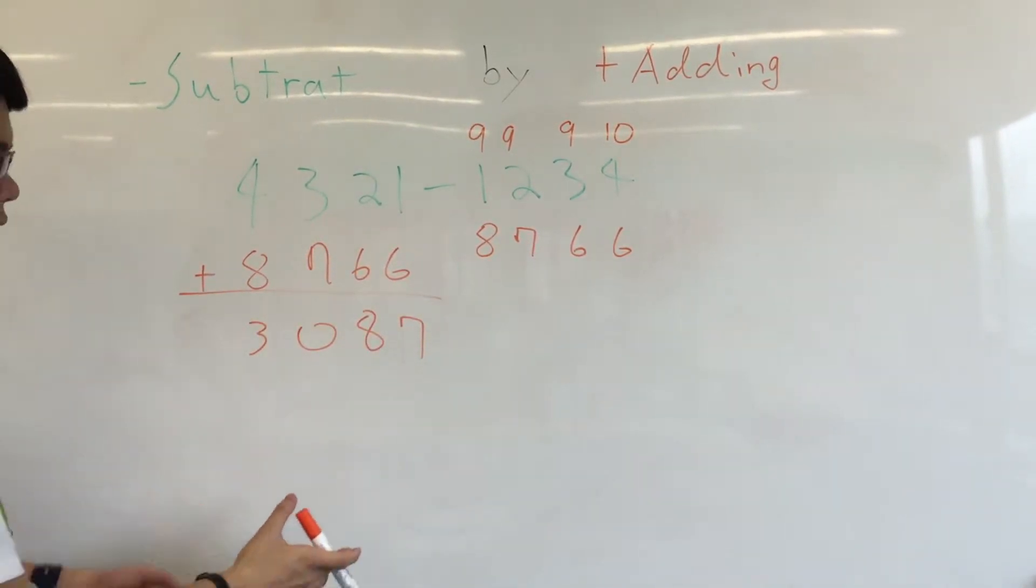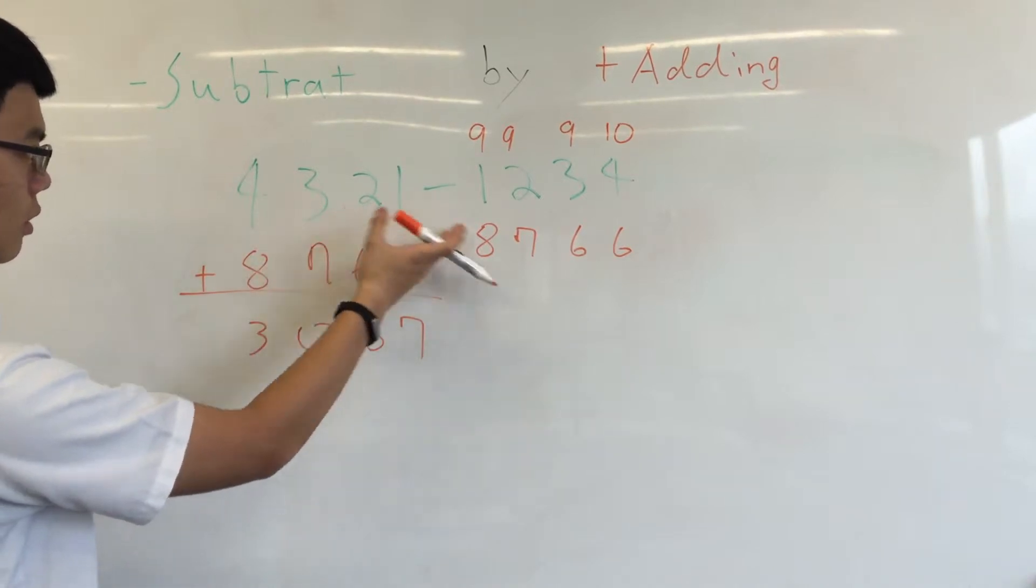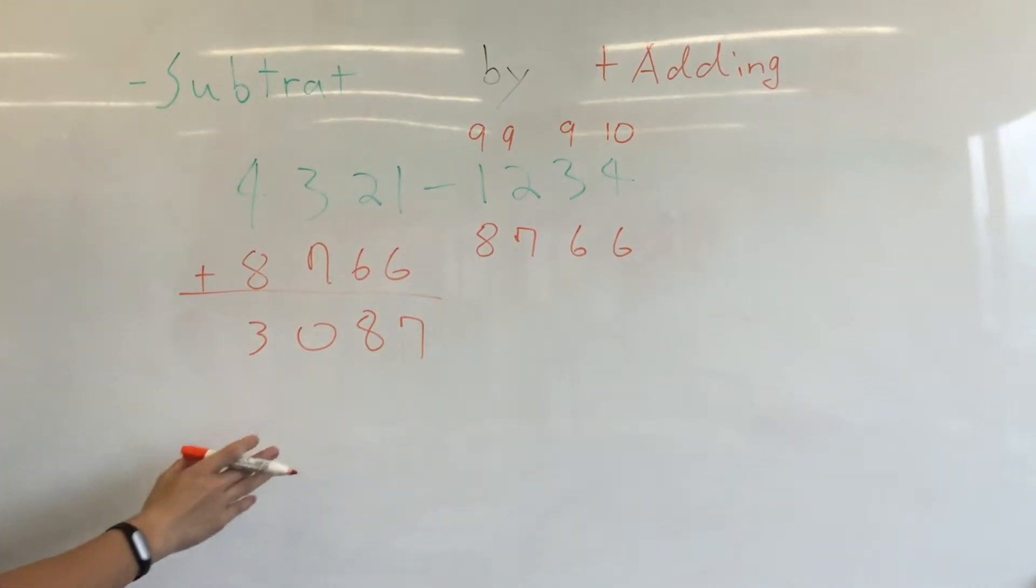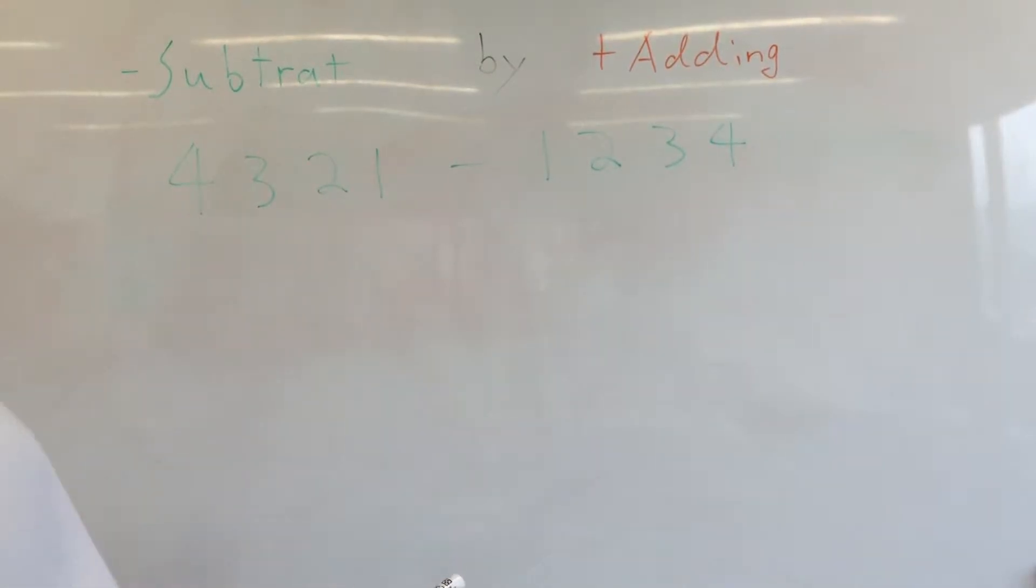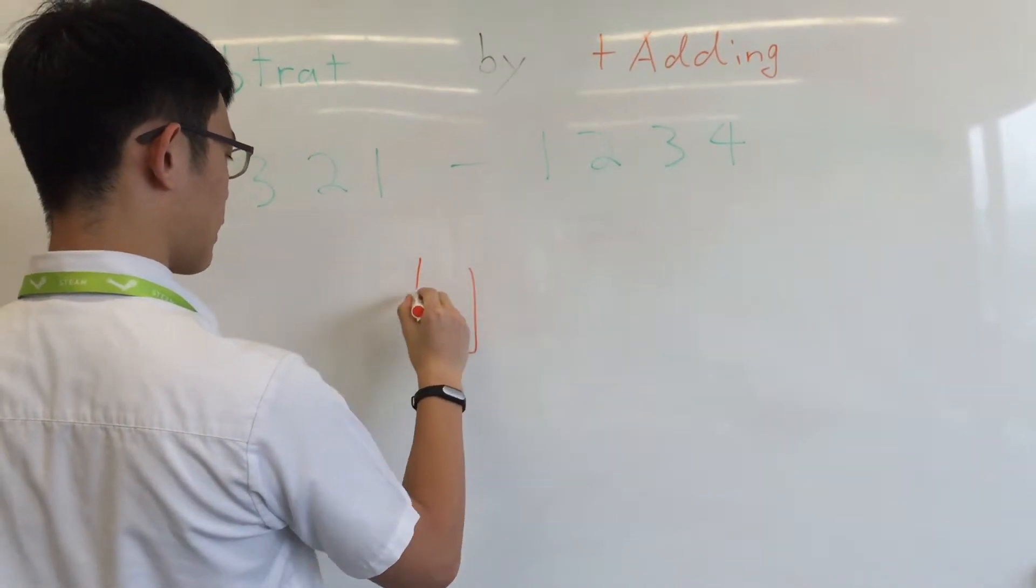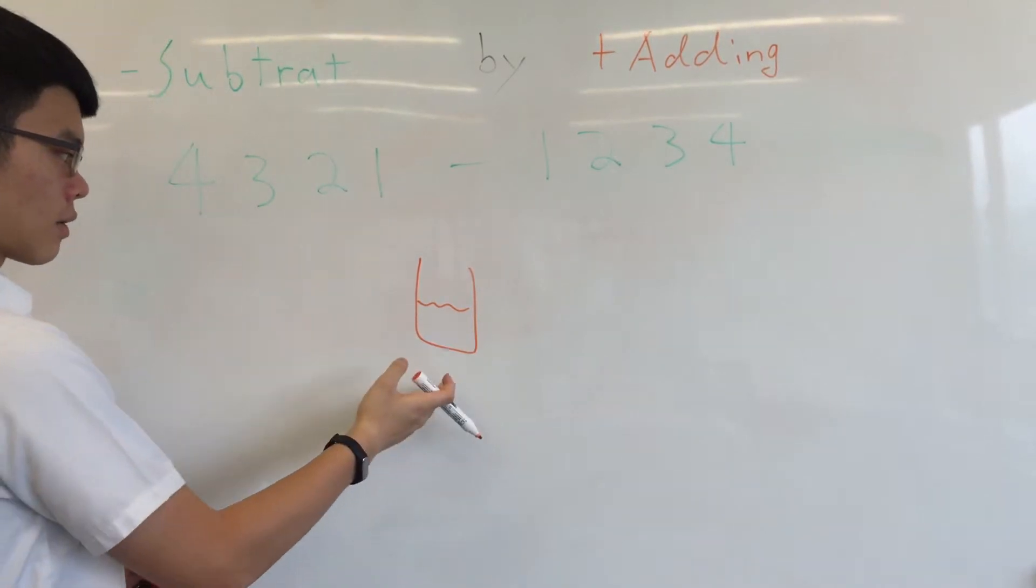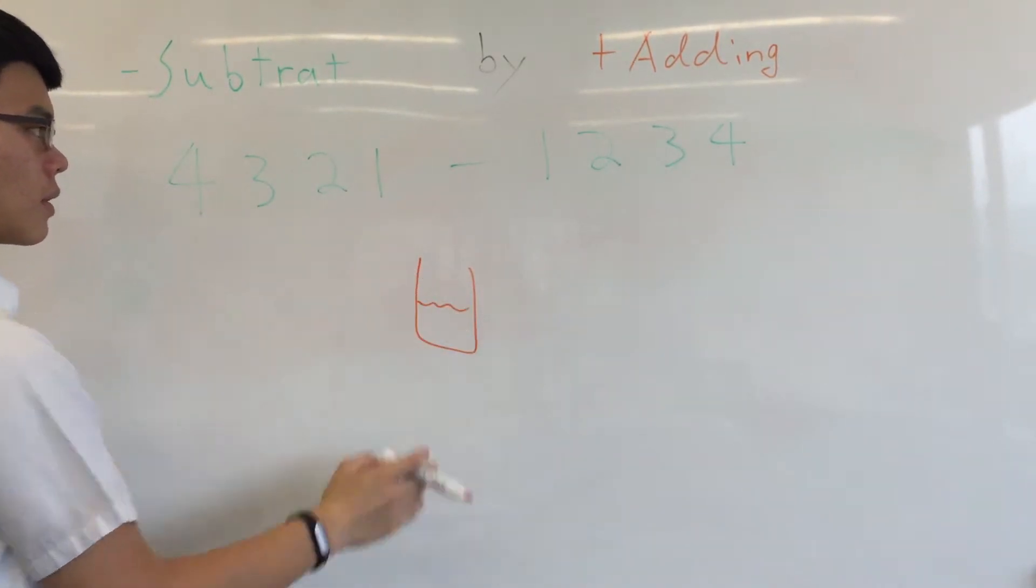And you can check it with a calculator or by doing the original method, but this should be the correct answer. So how does this work? It's a little bit like the idea of thinking about a glass half full or half empty.